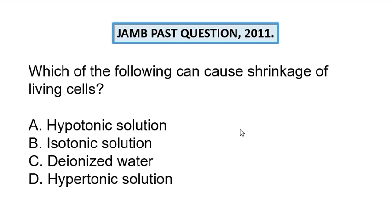The correct answer is D — hypotonic solution. Now let's go over option A: a hypotonic solution is a solution which has lesser concentration with reference to the cell. So hypotonic contains a lesser concentration with respect to the cell.